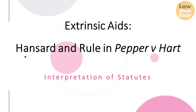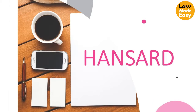In this lecture, we are going to look at extrinsic aids, that is Hansard and the rule in Pepper and Hart. What is Hansard? In the past, the courts were not allowed to refer to parliamentary material prepared for the statutes — they are Hansard.